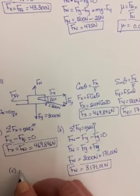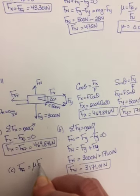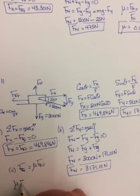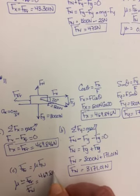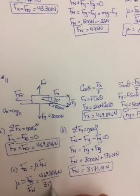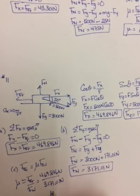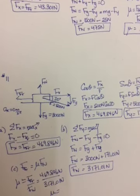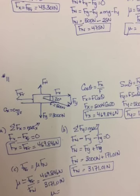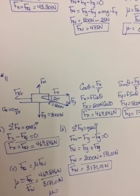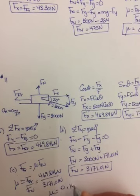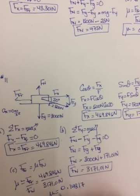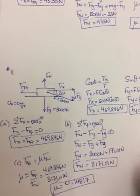Part C now wants the coefficient, so we go back to our fun equation and divide both sides by Fn. So Mu is equal to friction divided by Fn. Friction was 469.846 newtons, and Fn was 3,171.01 newtons. And when you do this, you should get something close to 0.15. Let me check: 0.1481, let's say 7. It's really 6, 9, but we'll go 7. That is number 11.